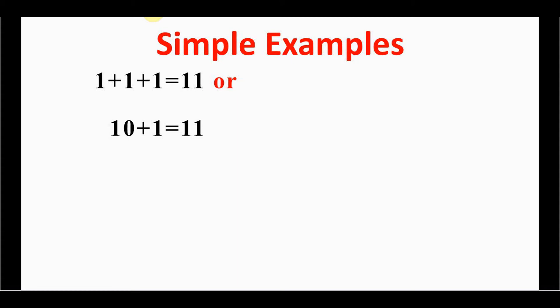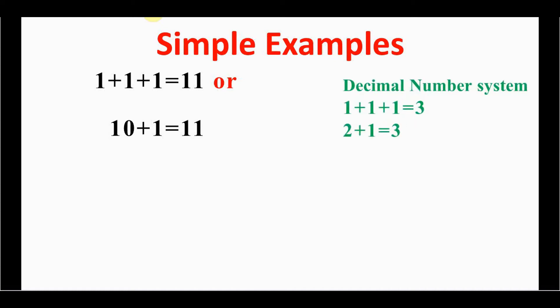For each binary number there is an equivalent decimal number. I have made a separate video on how to convert decimal to binary and back. The corresponding decimal: adding three ones equals three, so three is represented as double-one (11) in binary. Also, one-zero in binary represents two in decimal.